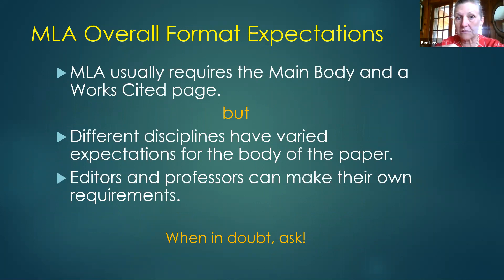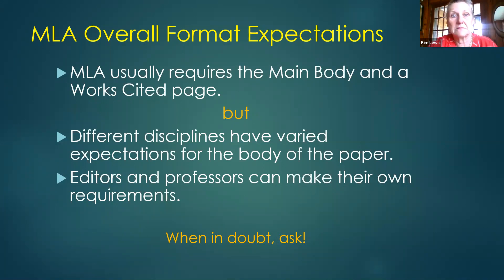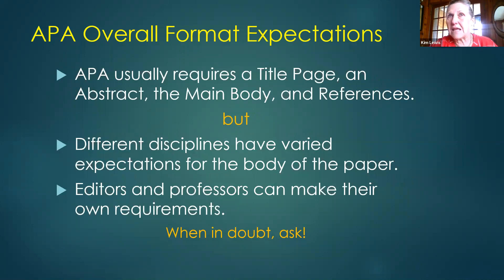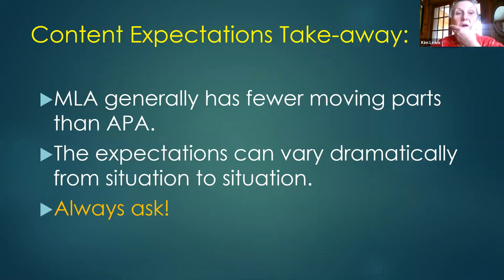Overall, MLA requires just a main body and a works cited page, though there are variations within disciplines and professors can make their own rules — so just ask. APA usually has a title page, an abstract, a main body, and a reference page, but that also varies by discipline and professor.